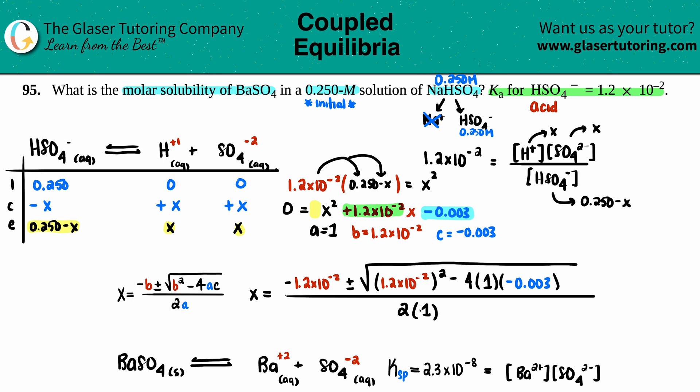Now let's simplify. 2 times 1 is just 2. And now I'm going to plug this all into the calculator at once. You try it on your own and see if we get the same answer. So I have 1.2 times 10 to the negative second squared, minus 4 times A, negative 0.003. And I get 0.012144. Let's take that square root, I get 0.1101998. I think that's good enough.